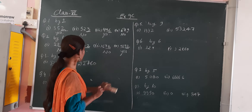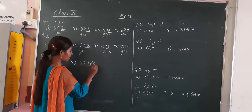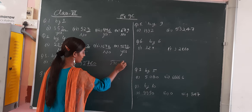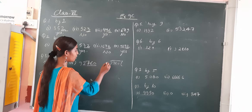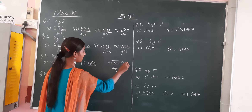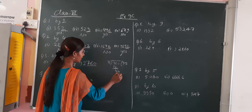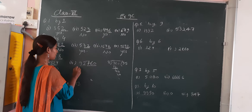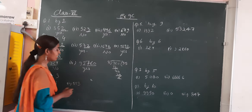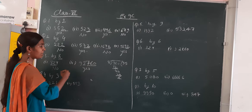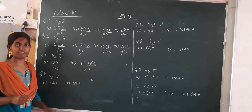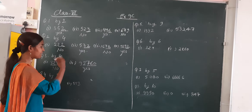Now we will check this one. Last 3 digits are 716. We will see whether 716 is divisible by 8 or not. 8 times 9 is 72, 4 is left. Then 8 times 5 is 40. Yes, this number is divisible by 8 — it is totally divisible. So this number will also be divisible by 8. So we confirmed: if the last 3 digits are divisible by 8, the whole number is divisible by 8.